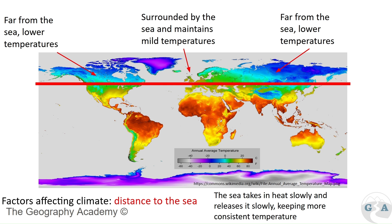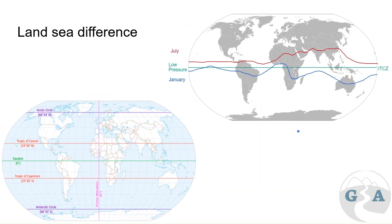Distance from the sea is also a factor. We can see extremes in temperatures because of the land-sea difference, and this can have a really profound effect. The land-sea difference can cause the ITCZ to migrate further up, creating high and low pressure systems over areas like Asia - which is why we start to see deserts at higher latitudes there. Some are colder deserts with warm summers and cold winters, at quite different latitudes.